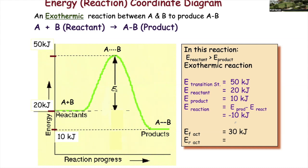The activation energy in the forward direction: we're going from 20 and climbing to 50, so that's 30. In the reverse direction, you're starting at 10 and climbing to 50, so that's 40. You're just reading it off the graph, but make sure you understand what these terms mean, otherwise you're going to get lost.